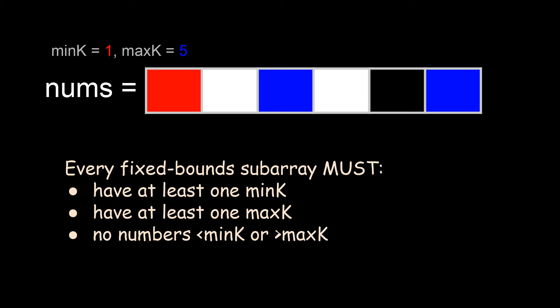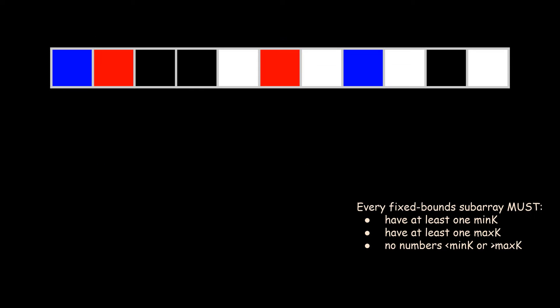Our job now turns into counting the number of fixed bound subarrays that contain at least one red, at least one blue, and cannot touch any black blocks. So this, as well as this, are both possible solutions. How do we use this information?